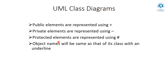In UML class diagrams, we have access control keywords like public, private, and protected. There are certain notations to remember: if a method or variable name is preceded by a plus symbol, it means it is public; if preceded by a minus or hyphen symbol, it is private; and if preceded by a hash symbol, it is protected. Public means all elements can access the members even from outside the class. Private means only elements inside the class can access those members. Protected means only child elements can access the members of the parent class.